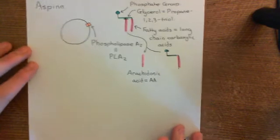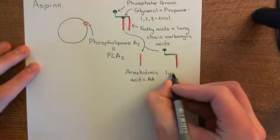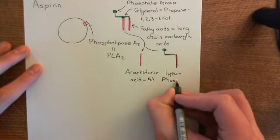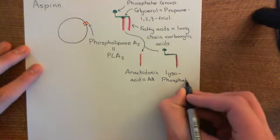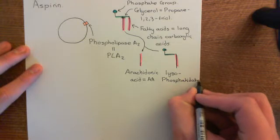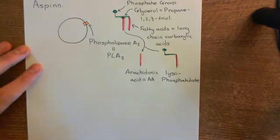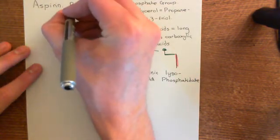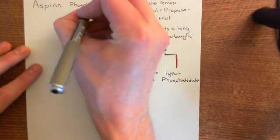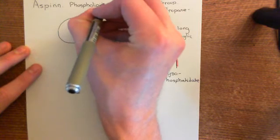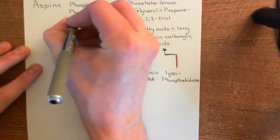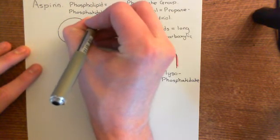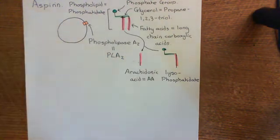The other molecule that we are left over with is known as lysophosphatidate. That name makes sense if we remember that the old name for a phospholipid molecule is a phosphatidate molecule — so phospholipid equals phosphatidate. So we have broken down our phosphatidate molecules into arachidonic acid and lysophosphatidate.